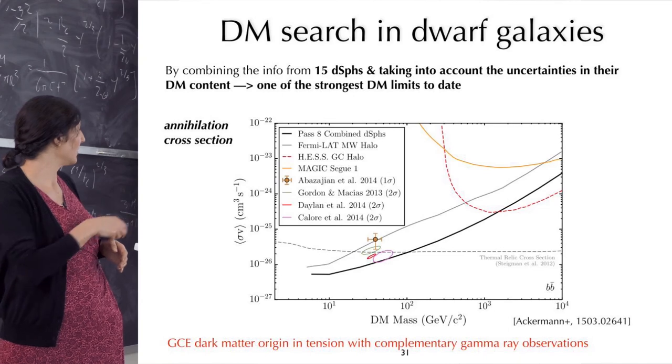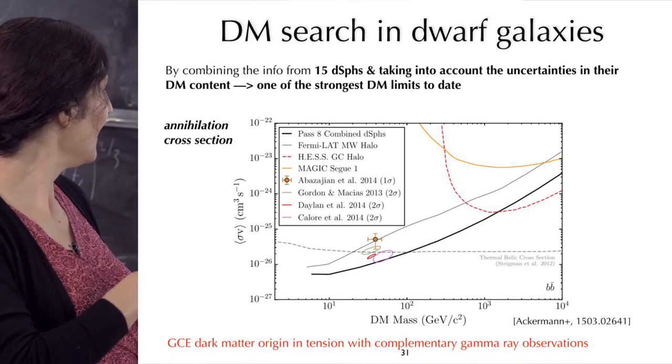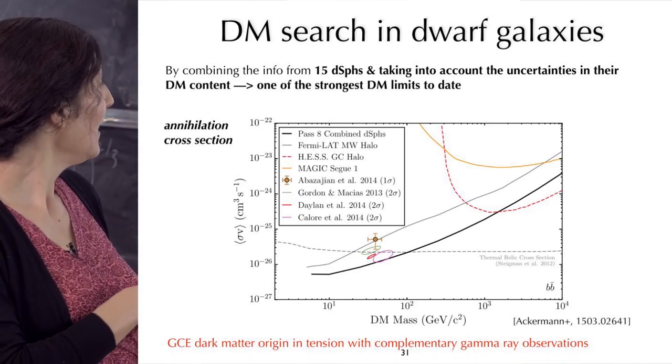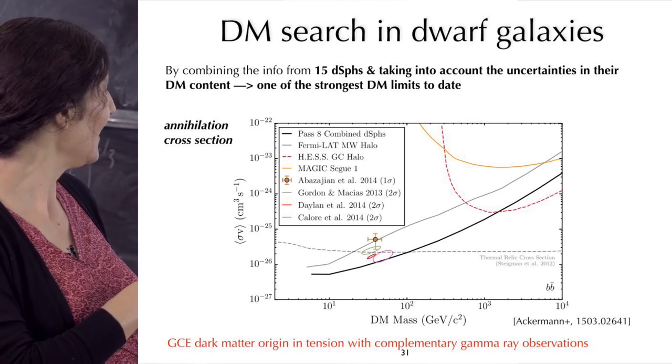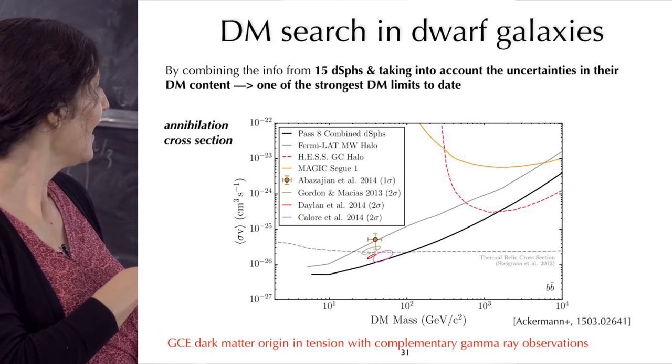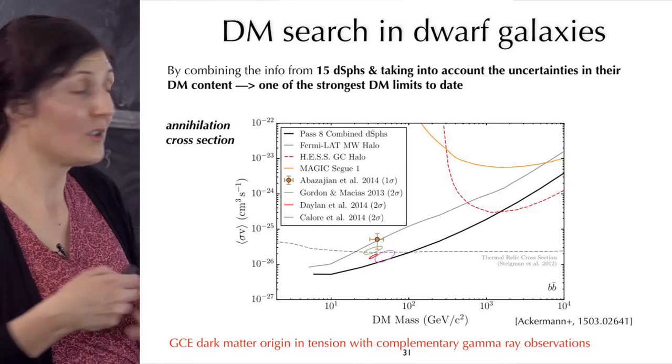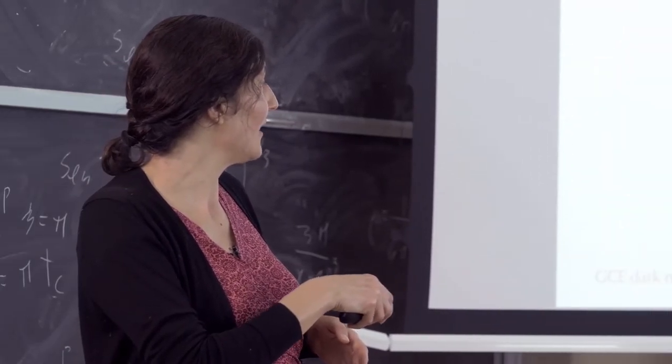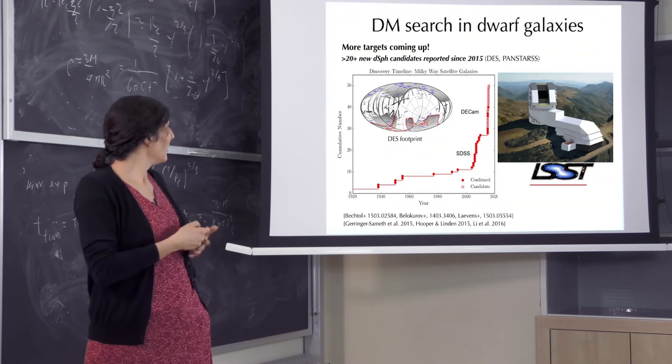People have looked for that. They didn't find any signal from dark matter and they set constraints. These would be constraints from dwarf spheroidal galaxies. Here is mass and here is cross-section. You see here where we told that the signal from galactic center, if dark matter, would be exactly here. But if you look in dwarves and you do not see them then we sort of constrain those models.